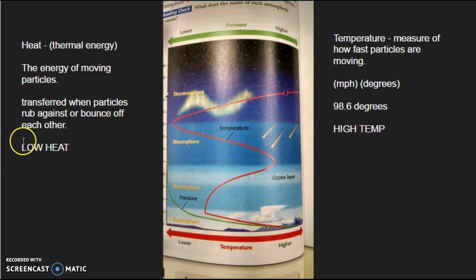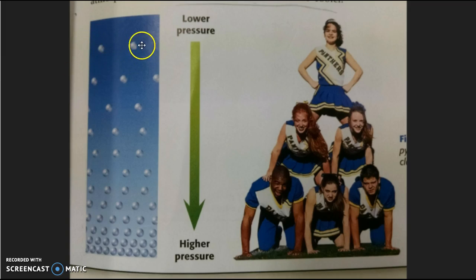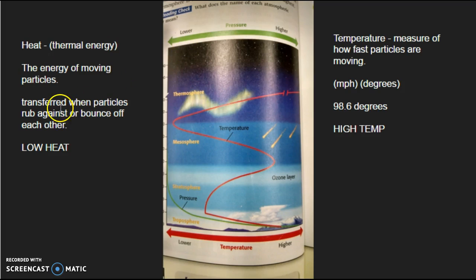But the thermosphere has low heat. Remember what heat is. Heat is the energy that particles can use to move or bounce off one another. And it's transferred, this thermal energy is transferred when particles hit each other or collide with each other or bounce off each other. But in the thermosphere, there are so few of them, they rarely bounce off or hit each other. So there is low heat. There's low thermal energy because the particles really aren't bouncing off or rubbing against each other.